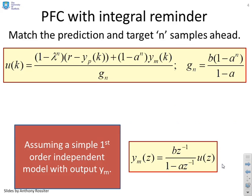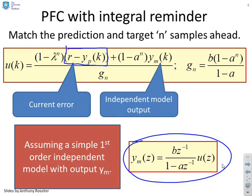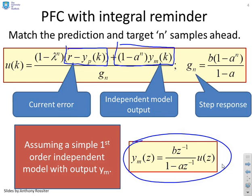Here's a reminder then of a basic PFC law for a first-order system, where we're matching the prediction and the target n samples ahead, and we're assuming a first-order model. What you'll see is we've got a current error term, which is R minus YP of K, where YP is the process output, and that's multiplied by 1 minus lambda to the n, and you've also got an independent model term coming from simulating your independent model, and you've got a step response value Gn, and that's your control law, which you can just write down explicitly.